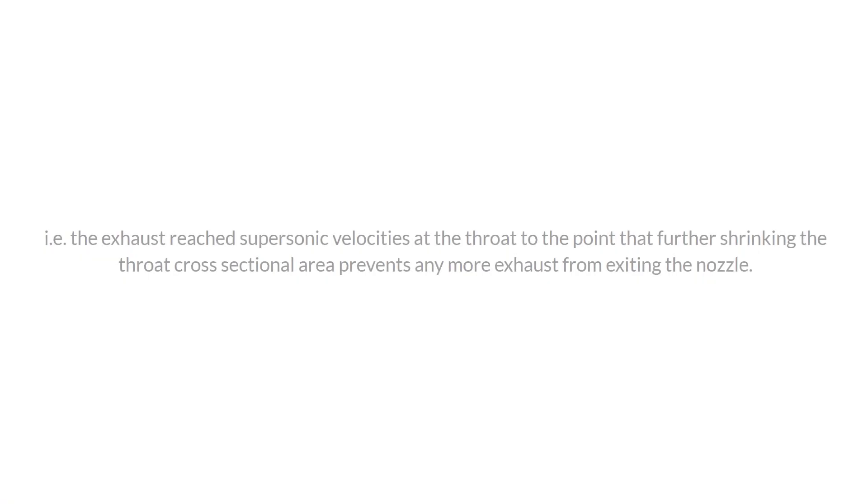In this video we'll also be looking at a few equations that can be used to calculate the optimal expansion area ratio and throat and exit cross-sectional areas for your nozzles. These equations all consider the case of choked flow — i.e. the exhaust reaches supersonic velocities at the throat to the point that further shrinking the throat cross-sectional area prevents any more exhaust from exiting the nozzle, which can be seen in my previous video.